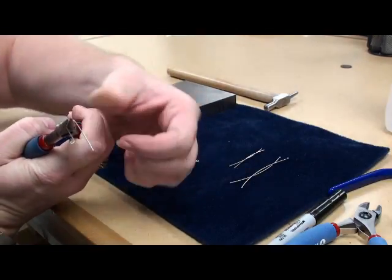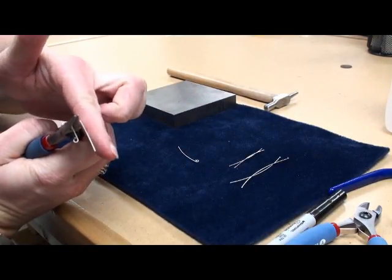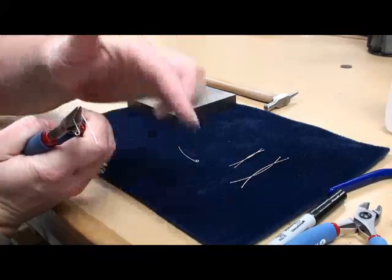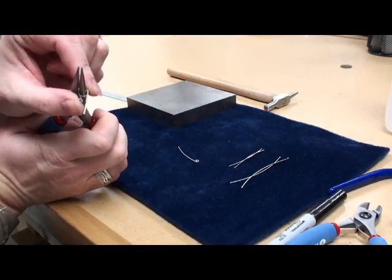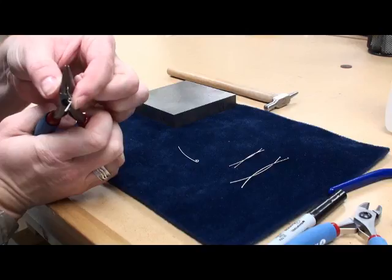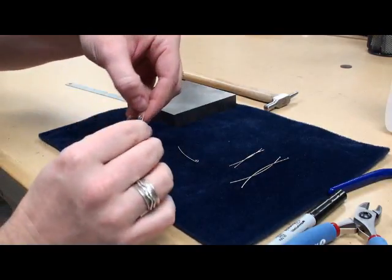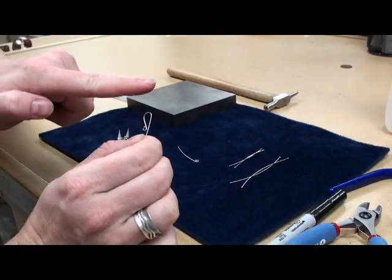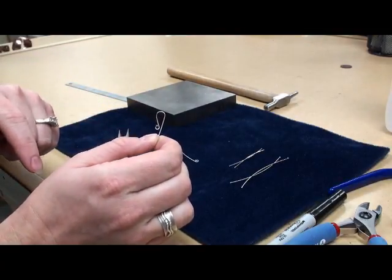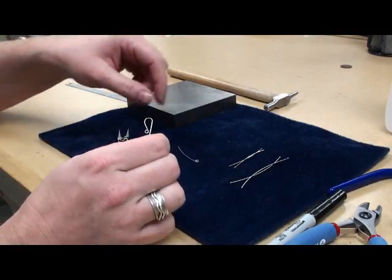But at that point what I do is I will start to bend this around. Now this is where I really kind of start to fudge with things. I don't necessarily bring one end all the way around to meet the other. I will go ahead and play with both sides and bring them both together, and what that allows me to do is get a really nice curve on both sides of my ear wire.